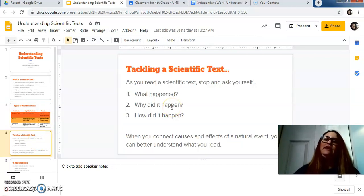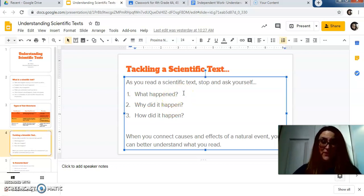So how do you tackle a scientific text? As you read it, stop and ask yourself, what happened? What is it talking about? What happened? Why did it happen? And how, in what way did it happen? So remember, why, for what reason? And how means in what way.